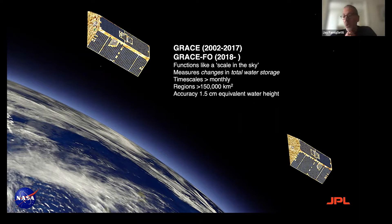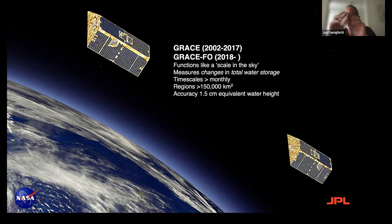It's the change in total water storage — all of the snow, the surface water, the soil moisture, and the groundwater together. So if we want to tease it apart, like we've done looking at groundwater, we need other data to segregate the signal. It works at large timescales over large regions — monthly and longer timescales, 150,000 square kilometers and greater. We can do downscaling with models, but that's the raw footprint.